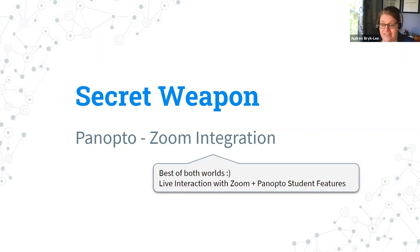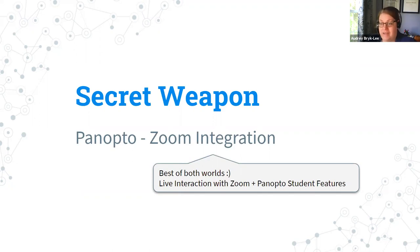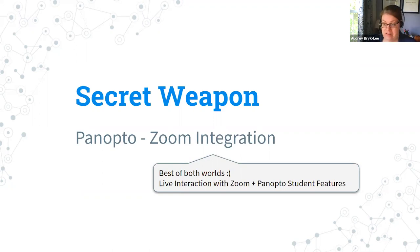It will automatically scan your recordings so they're searchable without you doing anything at all, and students can go to Panopto video in your course to watch your Zoom sessions. With the captions, it automatically creates a caption file, but you do need to add it — just a few clicks to go in and add it to your video. You do want to edit them for accuracy, which is why they don't add it automatically — they want to give you a chance to edit them before they become available to students.